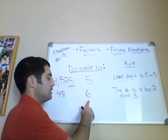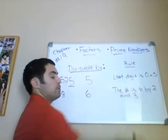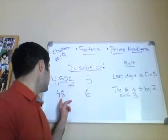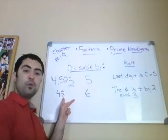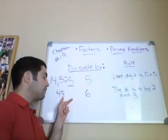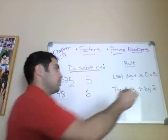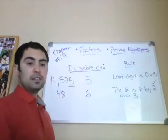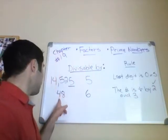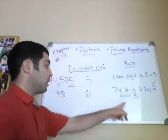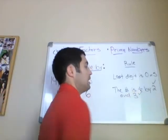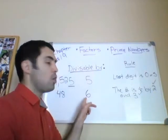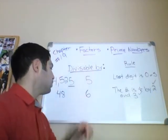If the number is divisible by 6, that means the number is both divisible by 2 and 3. So remember the divisibility rules: does the number end in 4, 6, or 8? 48 is divisible by 2 — check. Is it divisible by 3? Add the sum of the digits: 8 plus 4 is 12, and 12 is divisible by 3. So if it passes the test of both 2 and 3, then you know the number is also divisible by 6. So 48 is divisible by 6.